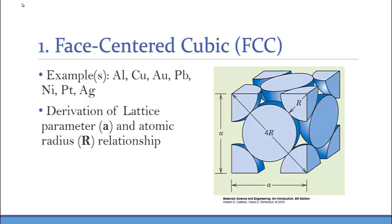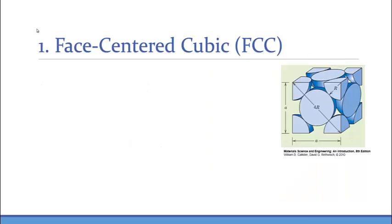As you can see, the face-centered cubic has eight corner atoms, one in the rear, and face-centered atoms that are shared between two unit cells. If you recall, the corner atoms are shared between eight unit cells, so within one unit cell it is considered as one-eighth of an atom. Now, let's derive the relationship between the lattice parameter A and the atomic radius R.